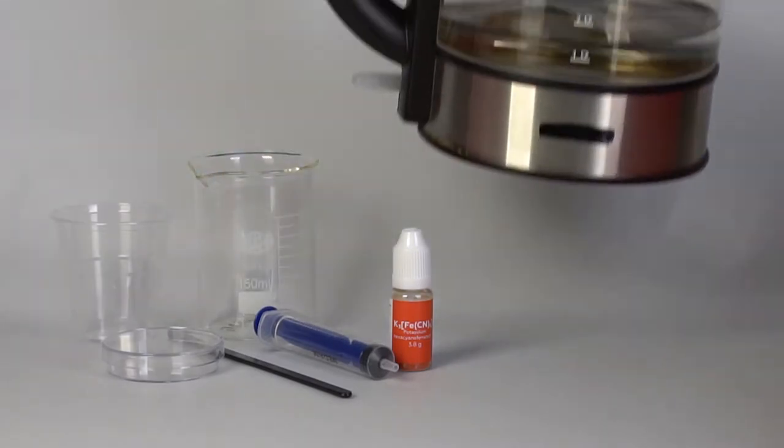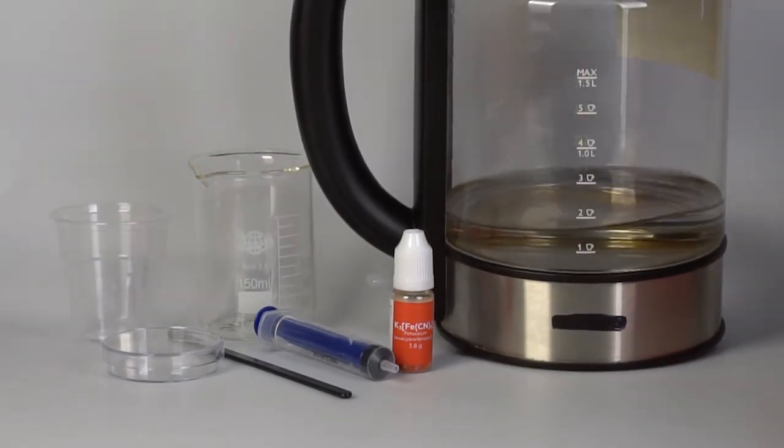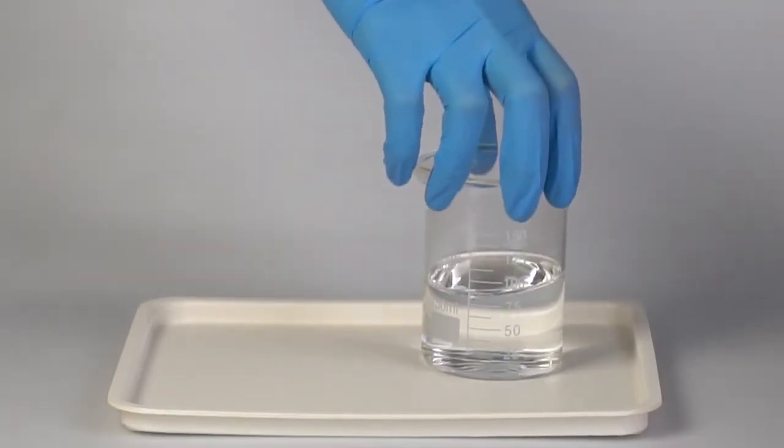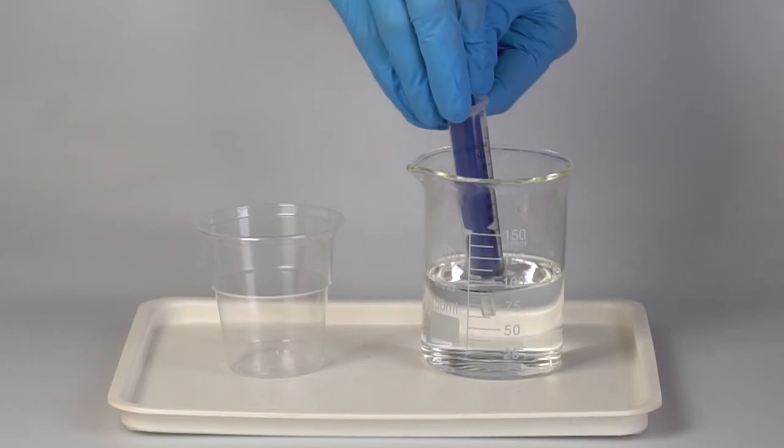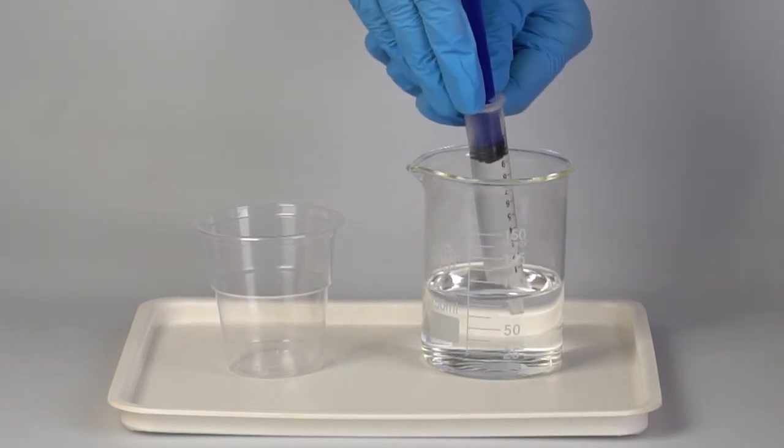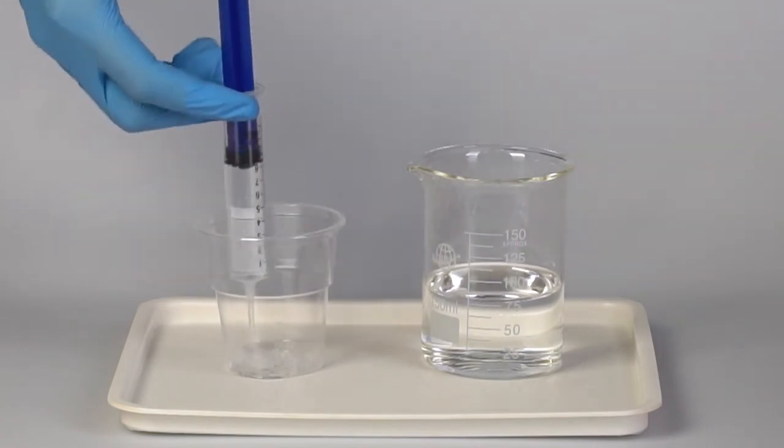Also, prepare a kettle of boiling water. Pour approximately 100 milliliters of boiling water into the beaker using the syringe. Take 10 milliliters of the hot water and add it to the disposable cup.